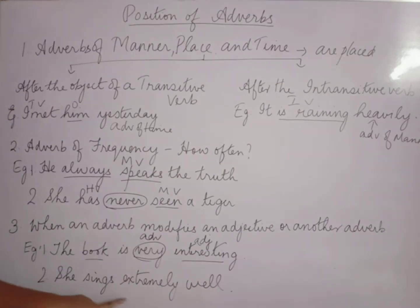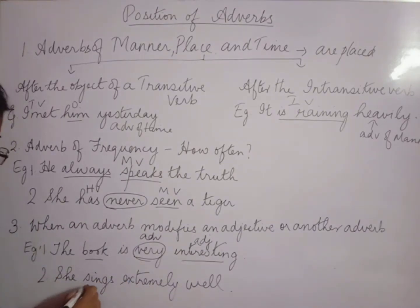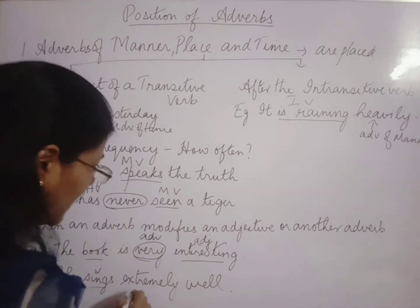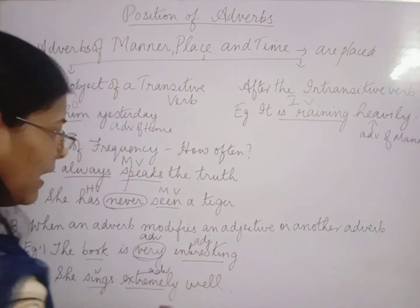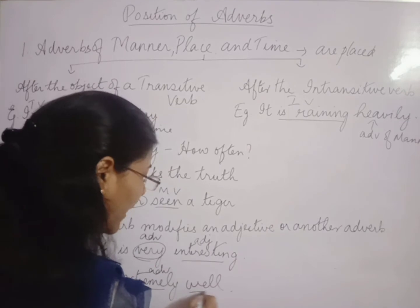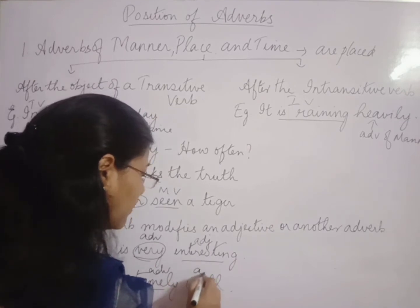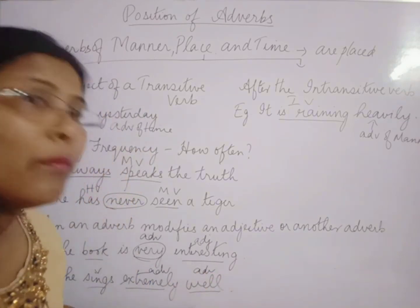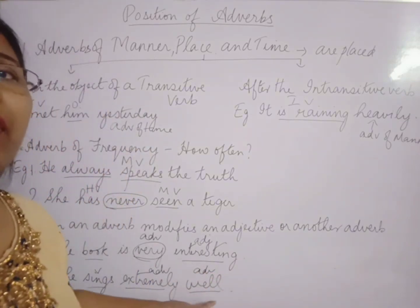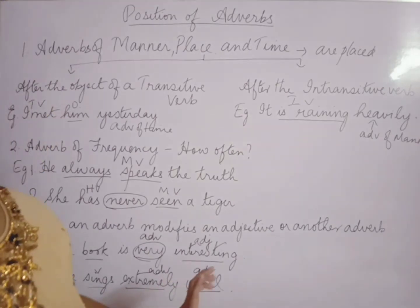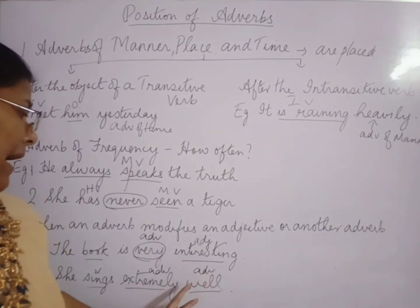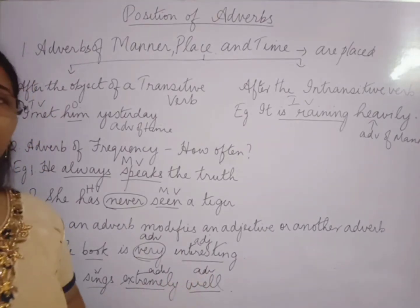In the sentence 'She sings extremely well,' 'sings' is the verb, 'well' is an adverb, and 'extremely' is also an adverb. So an adverb modifying another adverb is placed before the particular adverb it modifies.